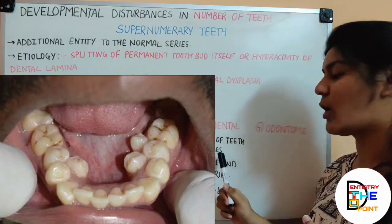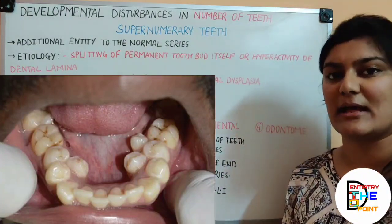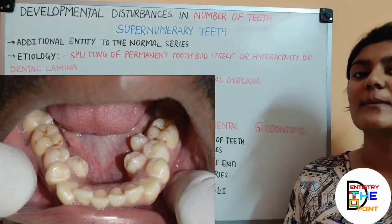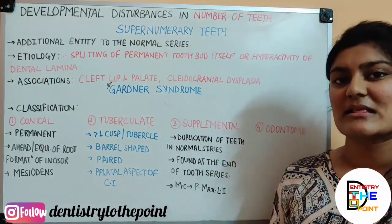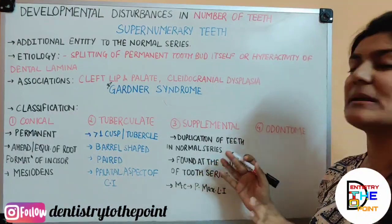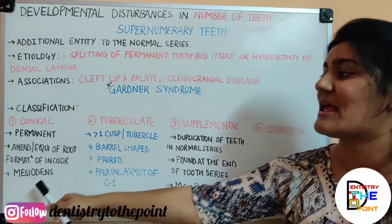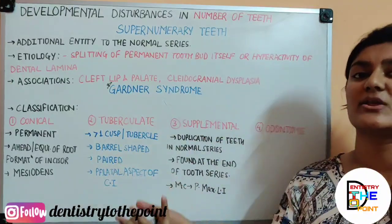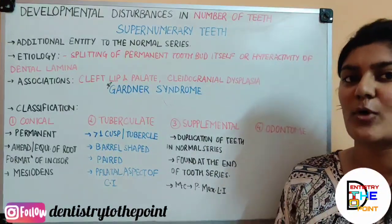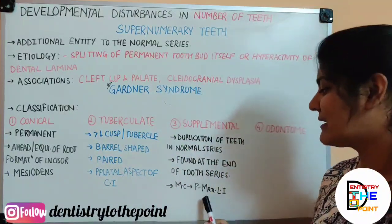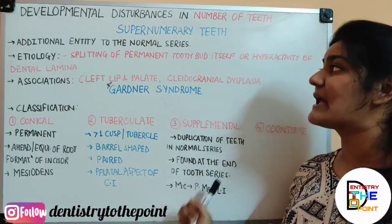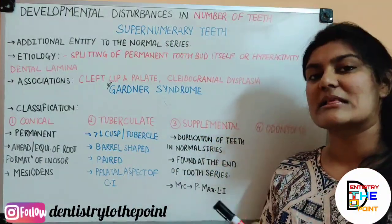The third type is the supplemental type — a duplication of a tooth already in the normal series. It is found at the end of the tooth series, after all permanent teeth have erupted. The most common form is a duplicate of the permanent maxillary lateral incisor. Supplemental supernumerary teeth is the most common type seen in the deciduous dentition.